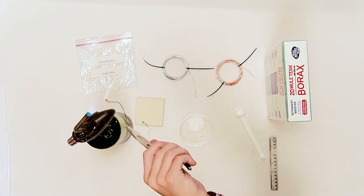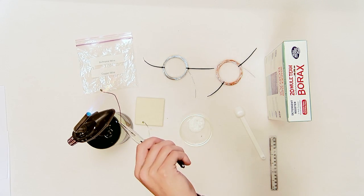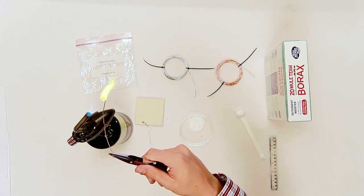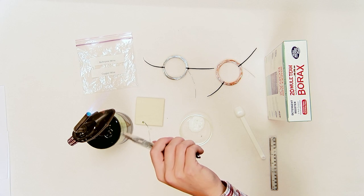Be sure to let the bead cool for a few moments before inspecting the color, as the color produced is temperature dependent. Repeat the process with one of the nichrome wires. The bead produced should be a shade of green.